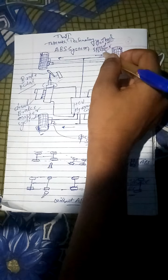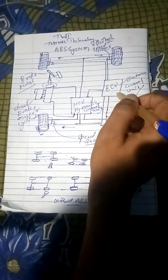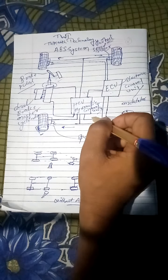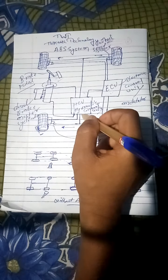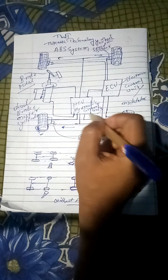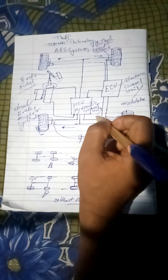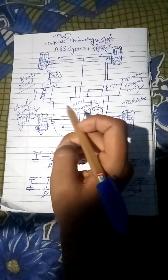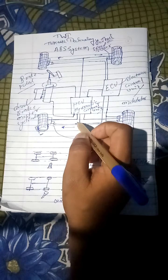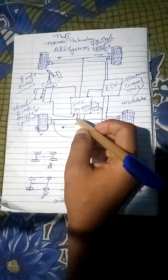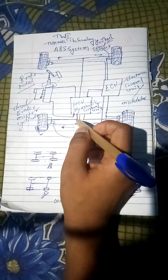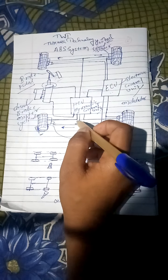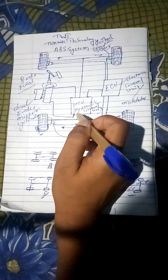ECU receives from the sensor and ECU directly transfers to the HCU hydraulic control unit or modulator, which senses from the ECU what hydraulic pressure is needed to reduce the skidding of the vehicle.